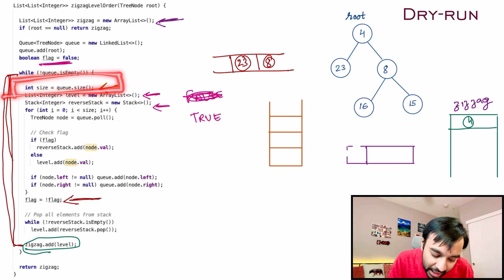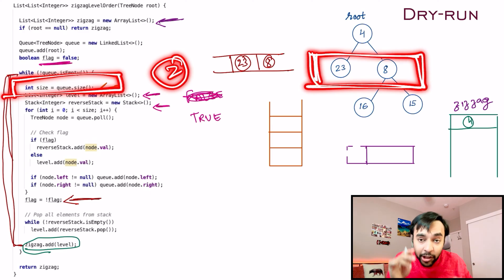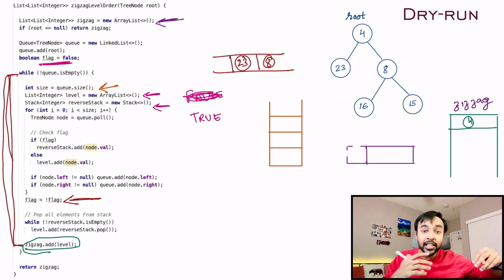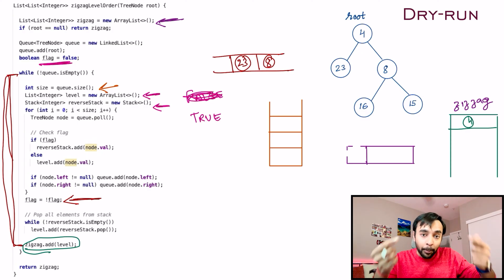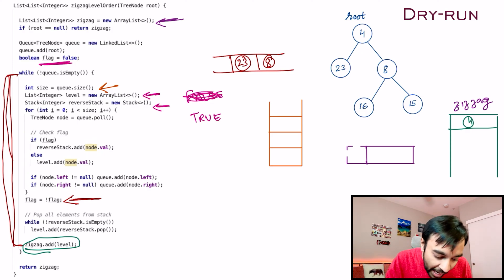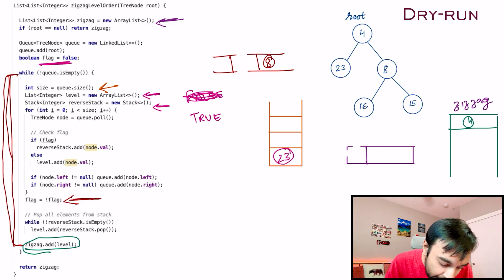This time check the size of the queue — the size is 2, which is the actual size of the level. Once you have popped two elements you are at the end of the level. Check the value of the flag: it is true, so I will pop these elements one by one and add them to my stack instead.